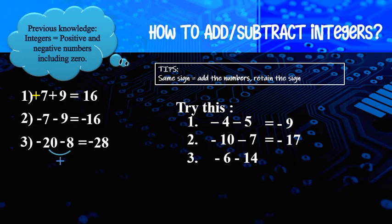Negative 6 minus 14 — look at the sign, same sign, so plus the number: 6 plus 14 equal to 20. Do not confuse with the sign in front of the number — you just look at the signs first. Same sign, so plus the number: 6 plus 14 equal to 20, then retain the sign — negative 20.